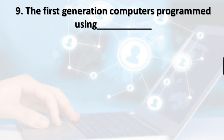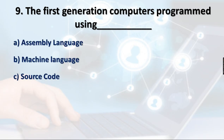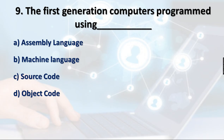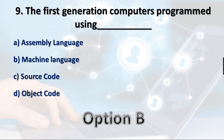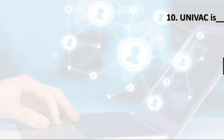Question 9: The first generation computer was programmed using which language? Options include assembly language, machine language, source code, and object code. Source code and object code are generated when writing programs. Assembly language came after machine language. First generation computers were programmed using machine level language, so option B is the right answer.